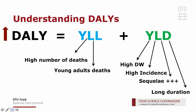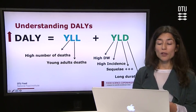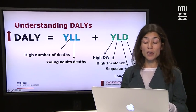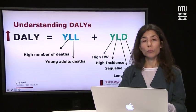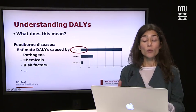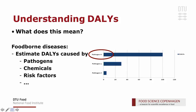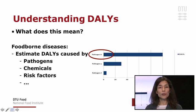To understand what factors lead to a higher or lower number of DALYs, we have a higher burden of disease if a disease causes a high number of deaths — especially in a young fraction of the population — if it has a high disability weight indicating high severity, a high incidence with many cases, and a long list of sequelae or long duration. Because DALYs are a comparable measure, we are able to rank foodborne diseases, compare different foodborne pathogens and even chemical diseases, and even compare foodborne diseases with other non-foodborne diseases or risk factors.